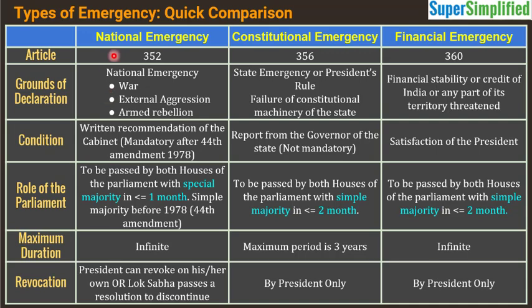The term 'armed rebellion' was not always the term used in the constitution. Before the 44th Constitutional Amendment in 1978, the term was 'internal disturbance,' which was vague and ambiguous. This is why 'armed rebellion' is more specific — it requires actual armed rebellion to invoke internal emergency, making the ground far more defined and harder to misuse.